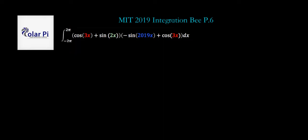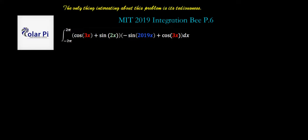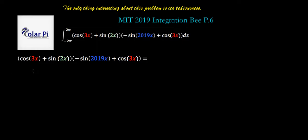2019 MIT Integration B Qualifying Exam Problem 6. This is all I have to say about this problem — it's boring. I probably shouldn't tell you that at the start of this video, but maybe boring is your cup of tea, so here goes.